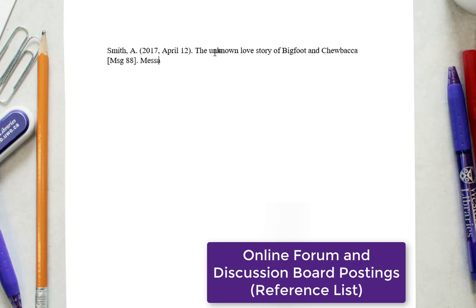It is important to note that titles for items in online communities, such as blogs, newsgroups, or forums, are not italicized. The URL of the discussion board should follow the title. In addition, if available, provide the URL where the message is archived — for example, 'message posted to and archived at.'